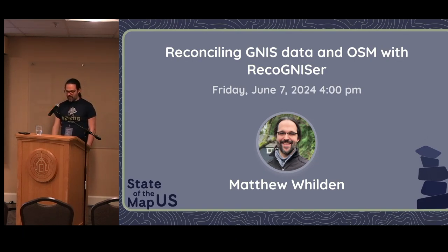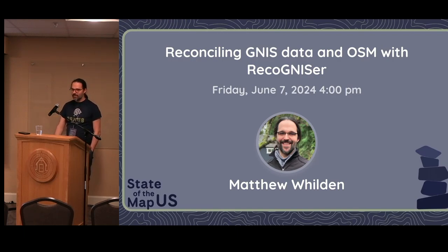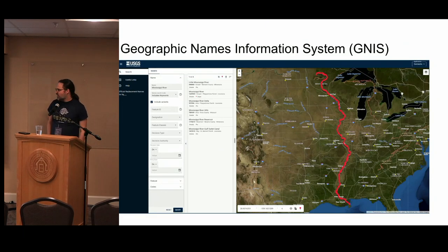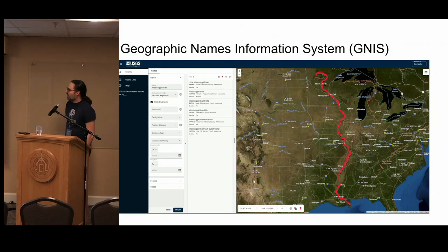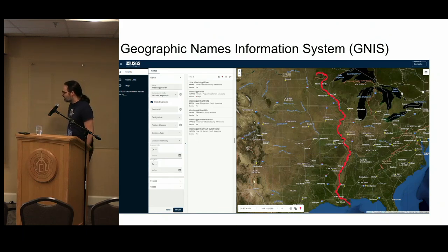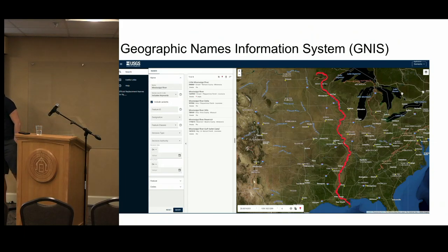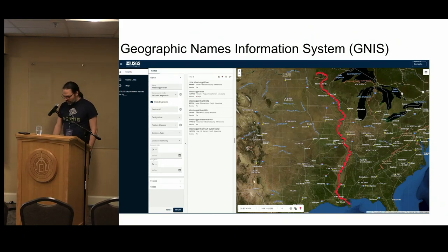We're going to be talking about a particular dataset called the GNIS dataset, which is the Geographic Names Information System. It is run by USGS, and they have a web portal for this. It is a collection of geo-encoded named entities. You can go to their web portal, type in Mississippi River, and it'll pull up a lovely little set of points. That is one way you can interact with the data.